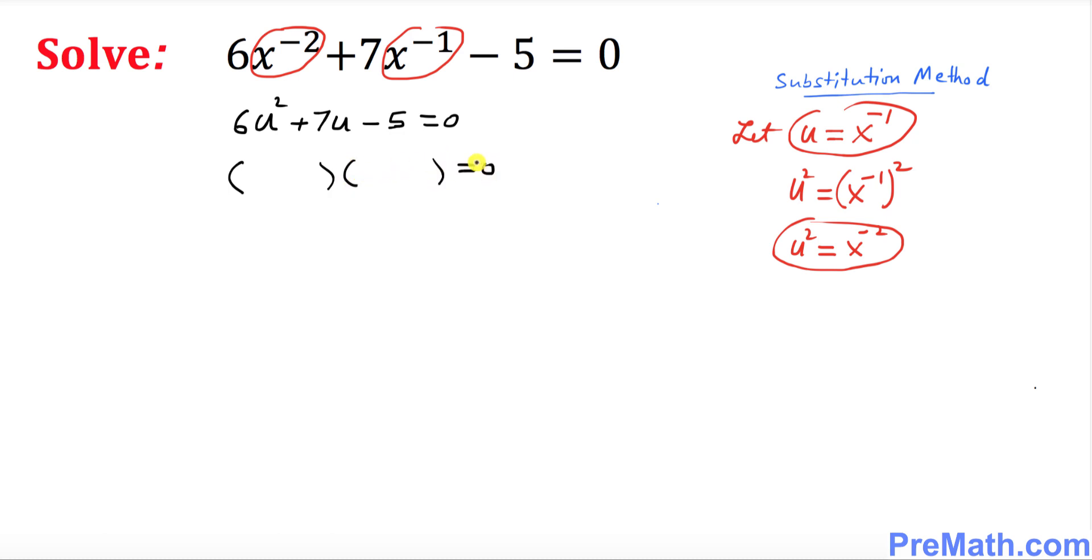So what are the possible factors? The possible factors are going to be 3u plus 5 and on the other parenthesis is going to be 2u minus 1. And let's go ahead and split them up. I'm going to say 3u plus 5 equal to 0, and the second parenthesis is 2u minus 1 equal to 0.